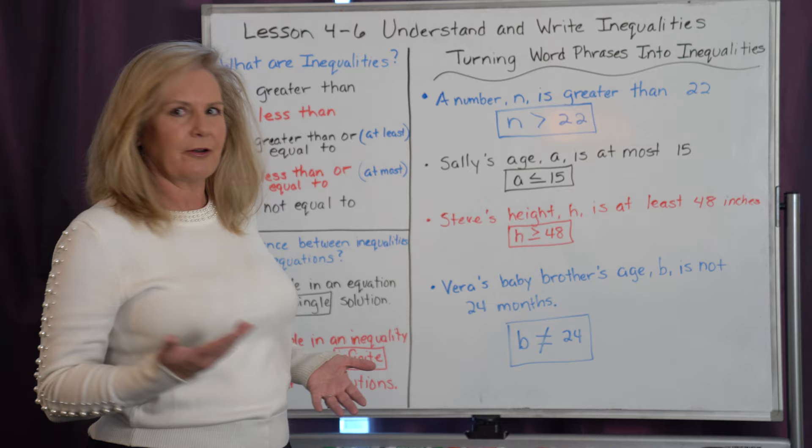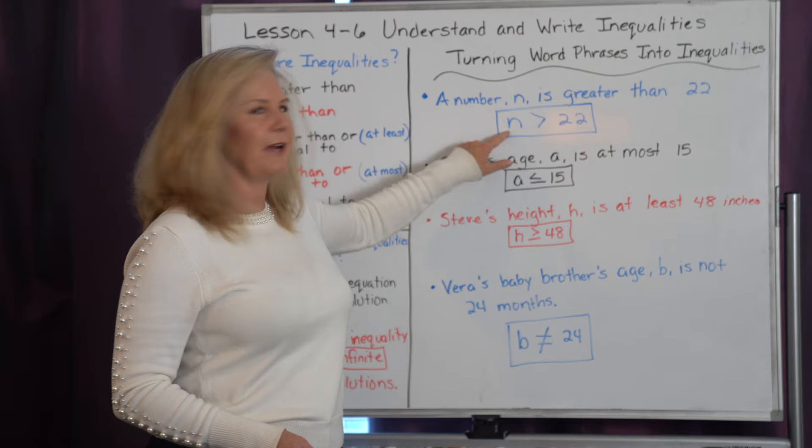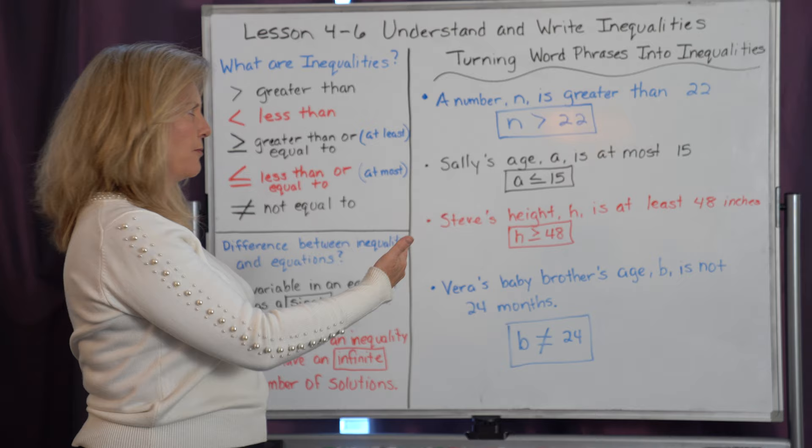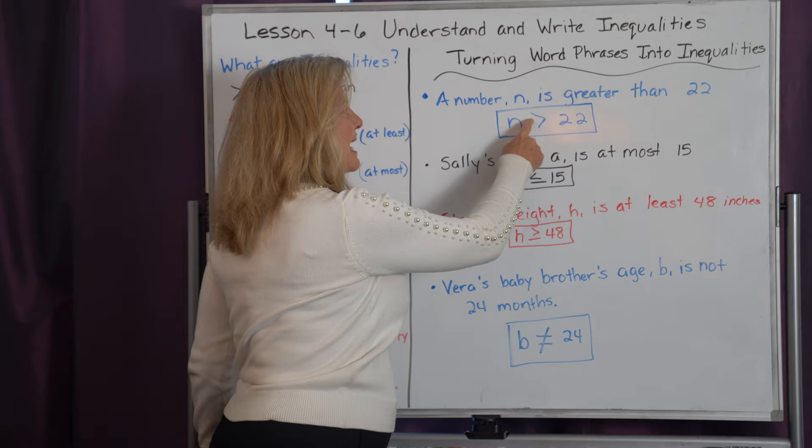That is our simplest inequality. Because they told us our variable was n, they told us it is greater than. Remember, the open side always shows the greater than and we are reading from left to right. When I see this open is on the left, that means it has got to be the greater.